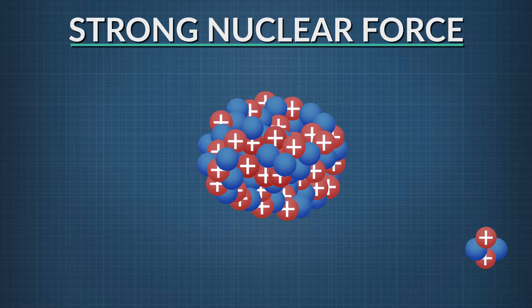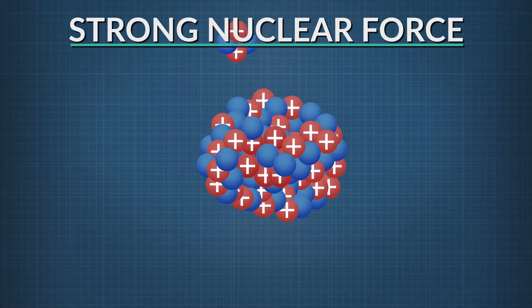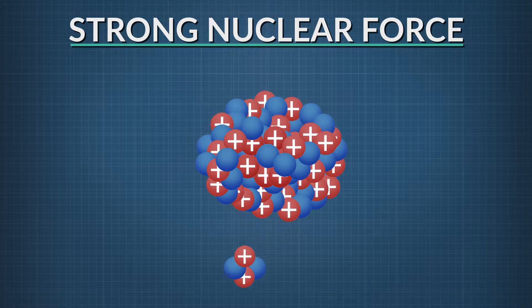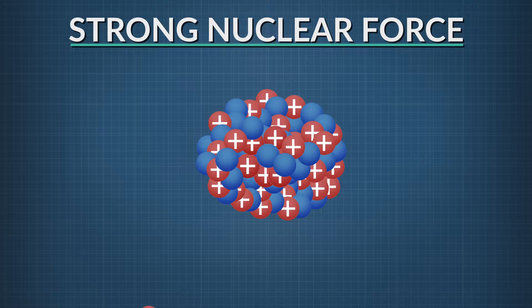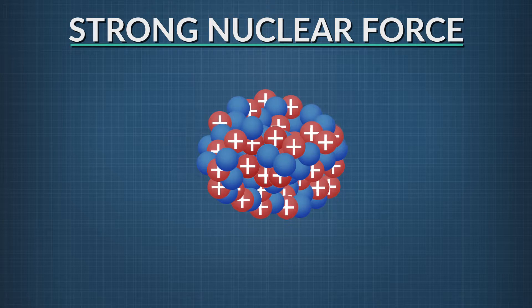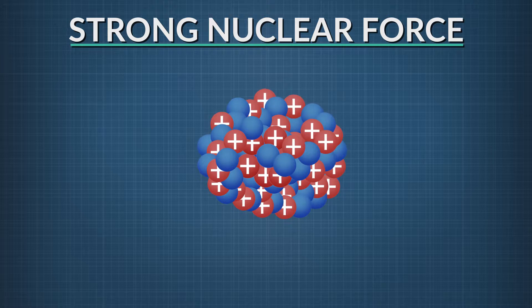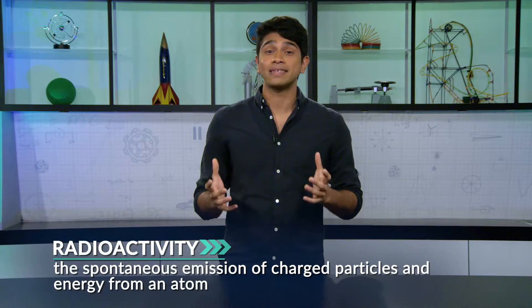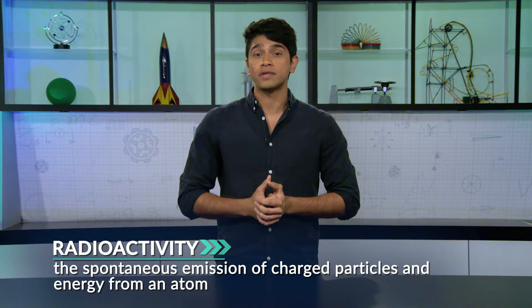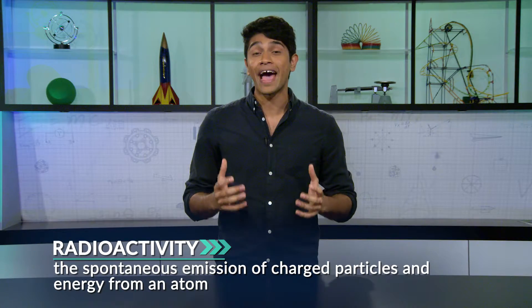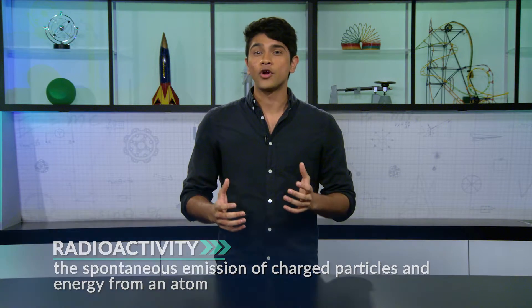When an atom has a large nucleus, the strong force is sometimes not strong enough to prevent electrical repulsion between the protons, causing the nucleus to become unstable. It breaks down and emits radioactive particles or energy. When the nucleus becomes too big and too unstable for the strong force to hold the particles together, the nucleus undergoes radioactive decay. Radioactivity is the spontaneous emission of charged particles and energy from an atom. There are three types of radioactive decay.